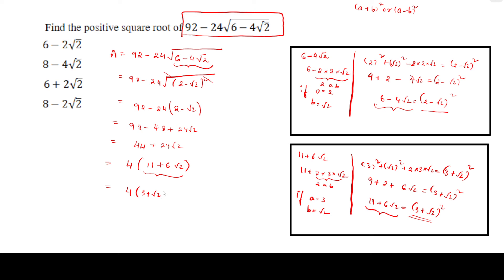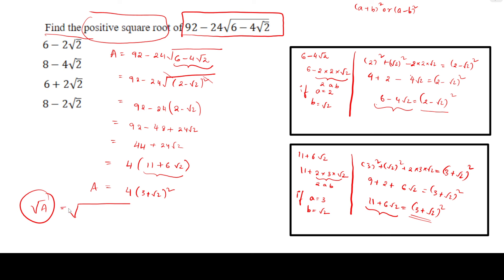So we have 4 times 3 plus root 2 whole square. What's our actual question? Find the positive square root. We have to find the square root of A. So square root of A equals the square root of 4 times 3 plus root 2 whole square, which is nothing but 2 times 3 plus root 2, which equals 6 plus 2 root 2. That is our answer, option number 3.